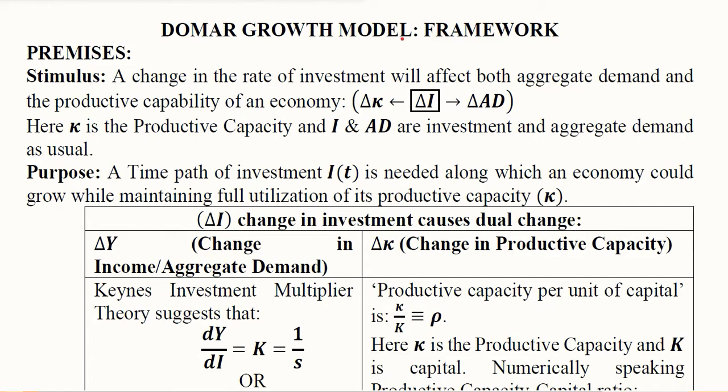The Domar growth model is basically a contribution to the work of Keynes, where Domar contributed to the existing body of literature by introducing the supply-side effect of investment, whereas the Keynesian contribution was related to the demand side only. Here the supply side is explicitly included in the model, and hence this process should give us a time path of investment that has the ability to keep the demand and supply sides in balance — that is, in equilibrium — in a dynamic sense, because we are considering a time path where time is an independent variable on which the other variables depend.